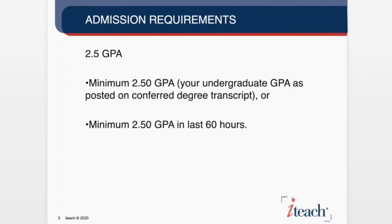If you do not have a 2.5 GPA overall as your posted graduating GPA, then we can look at the last 60 hours. We will take the last class you've taken, regardless of which college it was from, and count back 60 hours. If the GPA is above a 2.5 in those last 60 hours, that would meet the threshold requirement. We want to make sure transcripts show a degree conferred and a minimum 2.5 GPA.